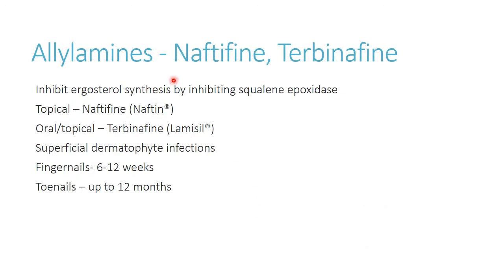Next are the allylamines — naftifine and terbinafine. You'll see these as topical products or occasionally oral. Brand names include Naftin and Lamisil, and many are available over the counter, so you may give instructions without writing a prescription. These are really good for fingernail and toenail infections. The nice thing about topically applied antifungals is a low likelihood of systemic side effects, since there's minimal systemic absorption and high concentrations at the site of action.